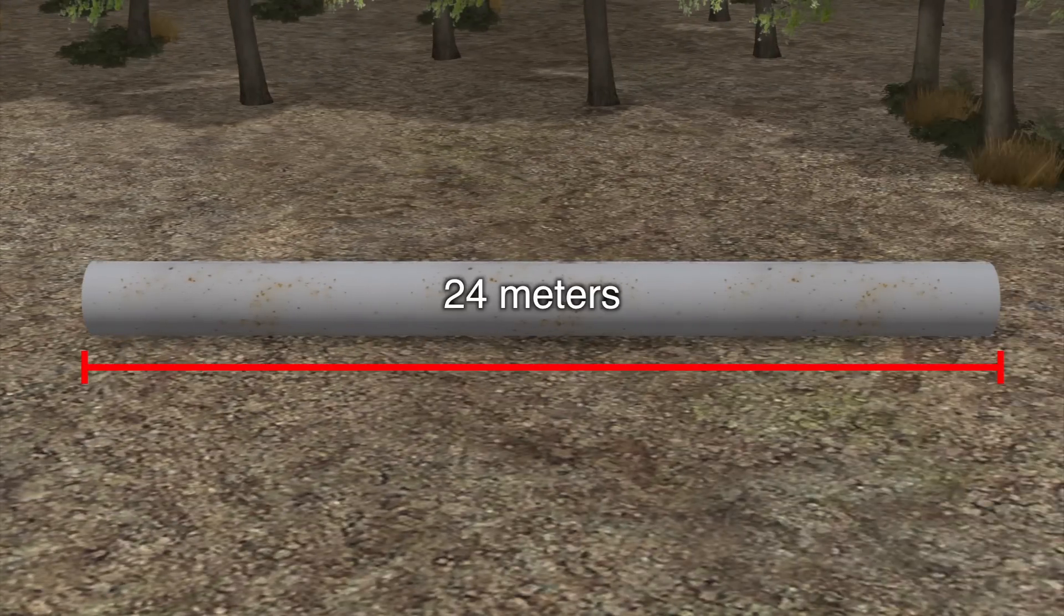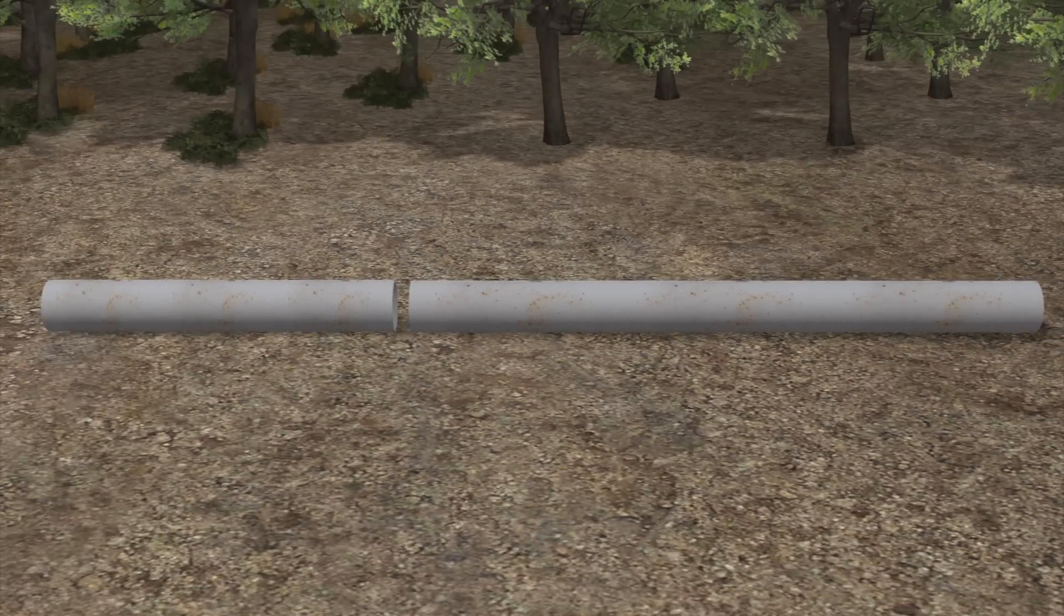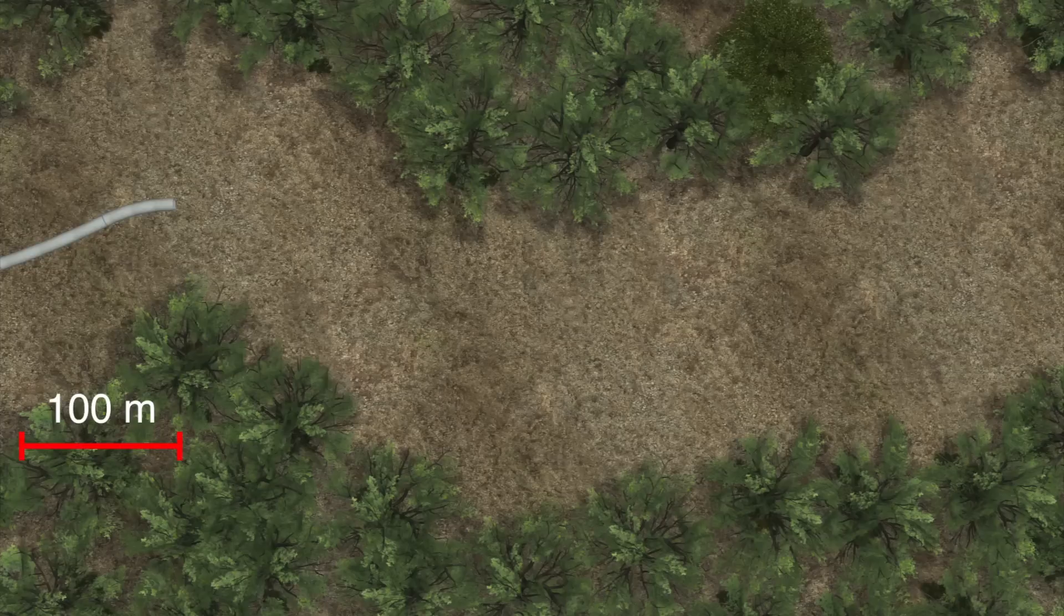Pipe is strung above ground in lengths of up to 24 meters and welded into sections that are 100 meters to over 1 kilometer long.